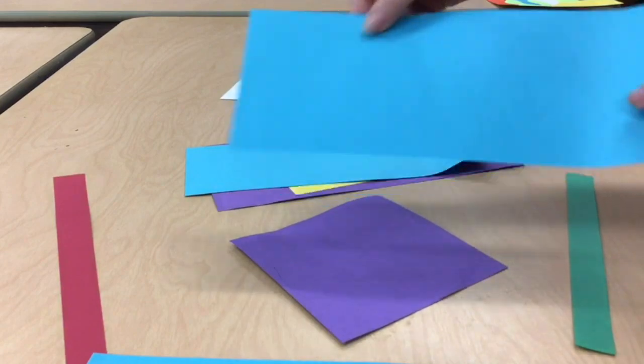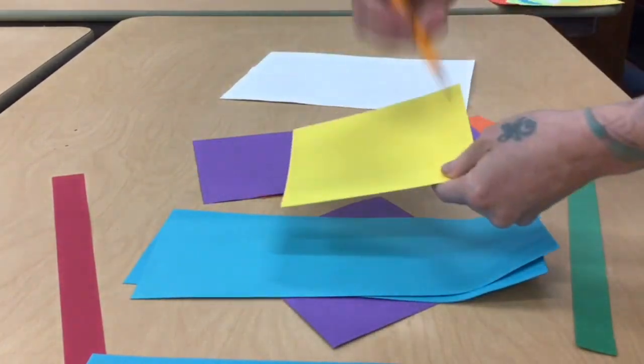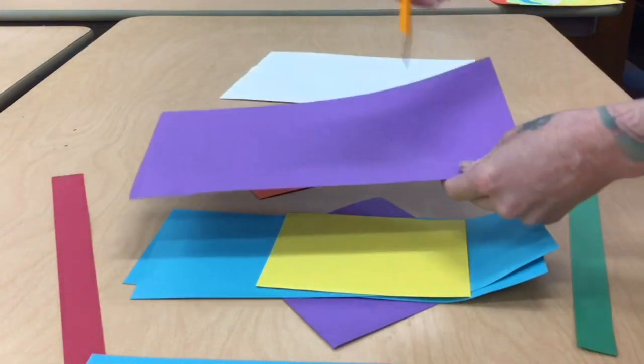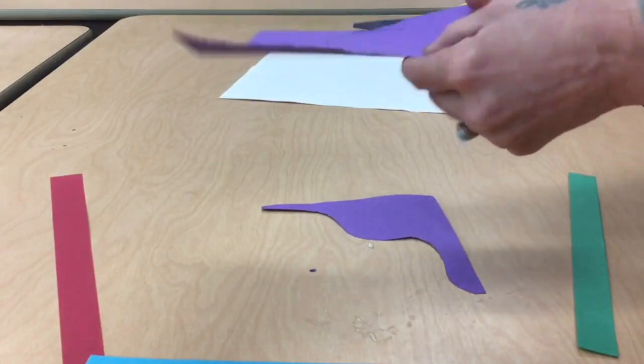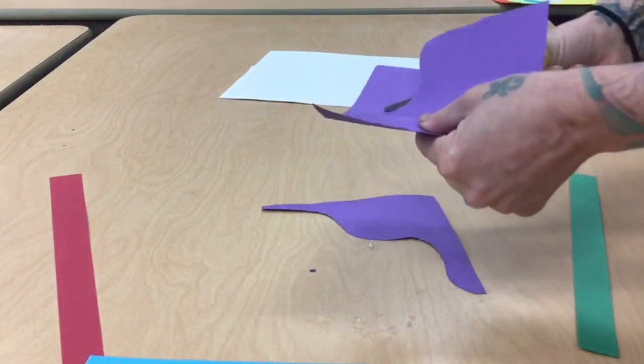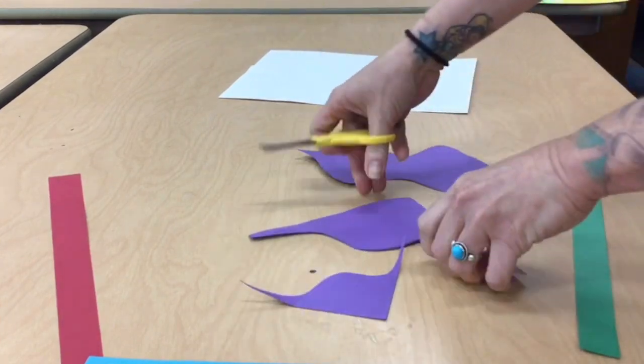Once you are done creating your shapes and designs onto each one of your scrap pieces of paper, the next step will be to use your scissors to cut them out. Remember to keep your scraps. You may want to use them in your collage as well.